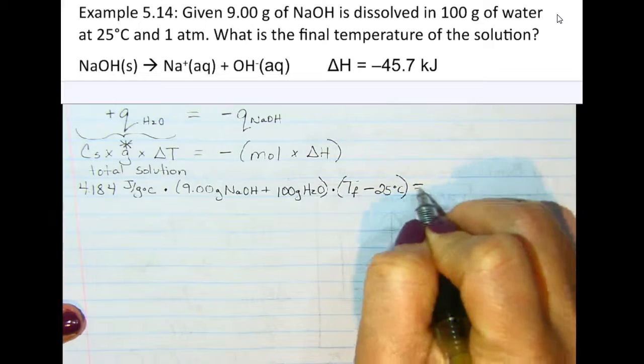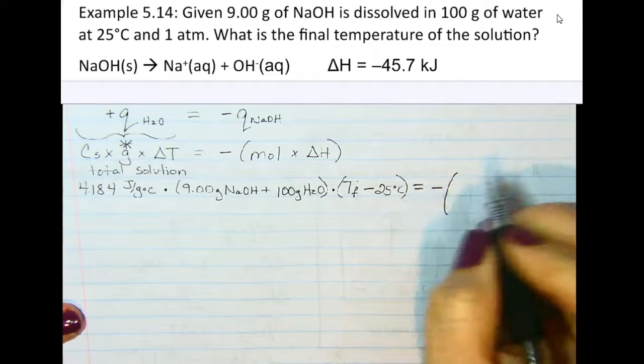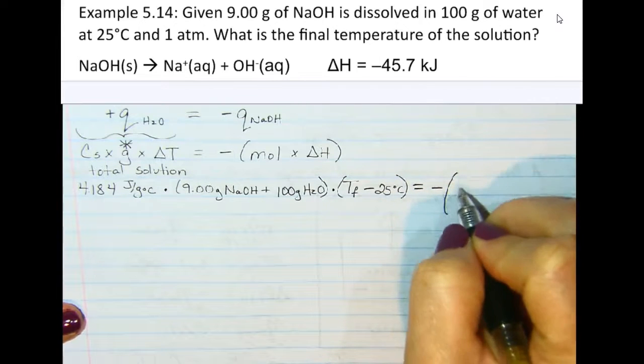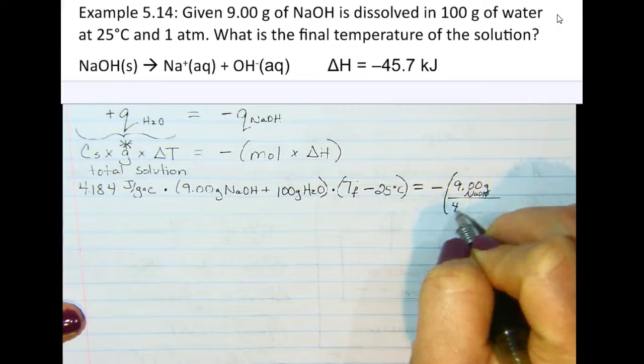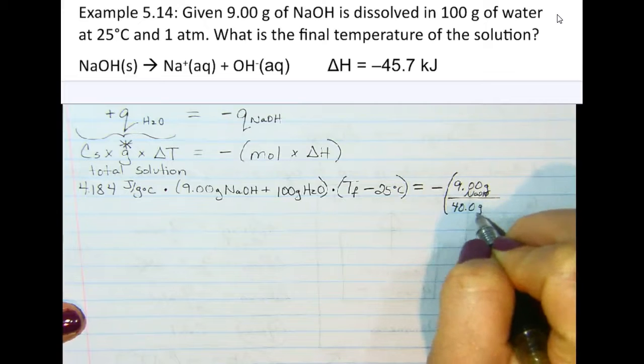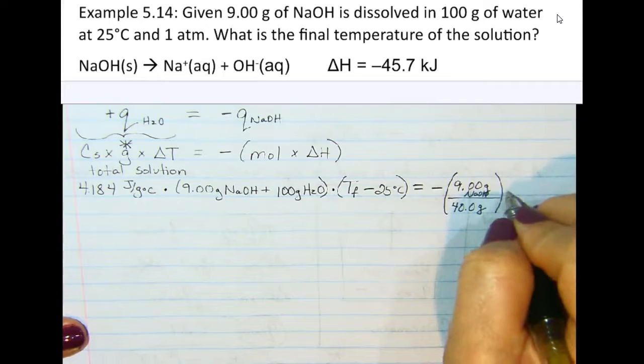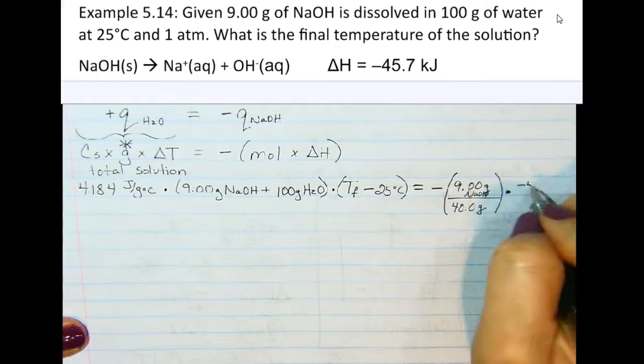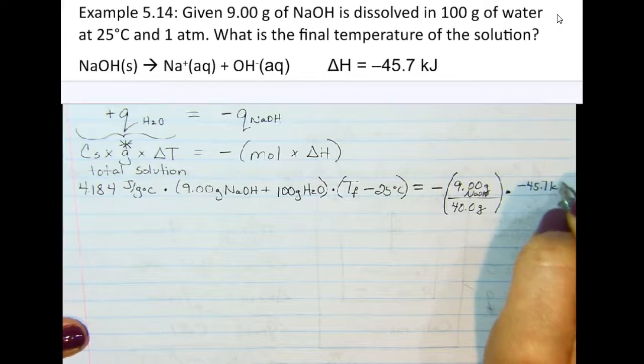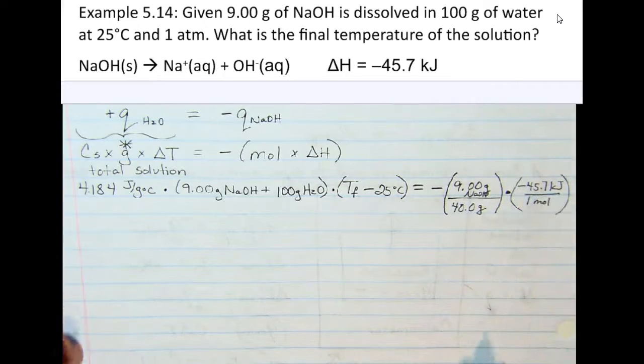And then this is equal to negative, and in order to find the moles of sodium hydroxide, we have to take the grams that we're given of sodium hydroxide and divide it by its molar mass, which is 40.0 grams. And so this is equal to the moles of the sodium hydroxide. We're going to multiply this times the delta H, which is given as negative 45.7 kilojoules, and that would be per one mole sodium hydroxide.